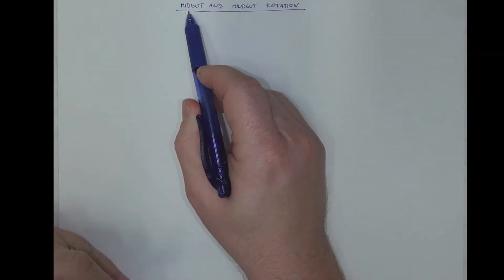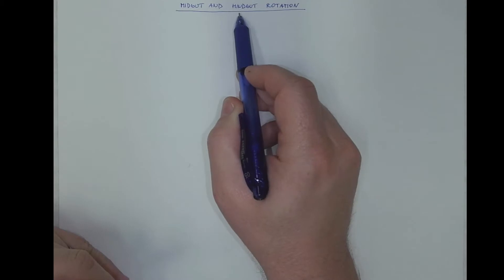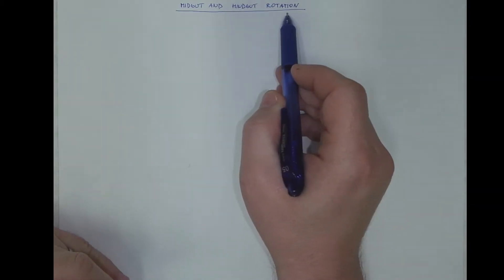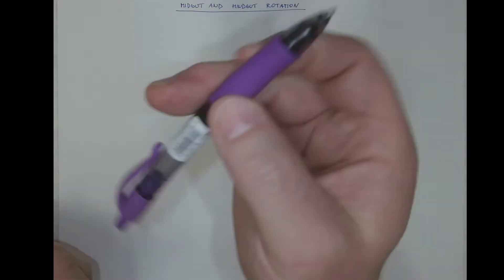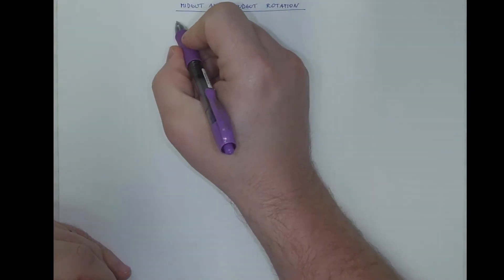Both the middle part and the posterior part of the gut undergo a significant rotation. Let's start with the midgut.